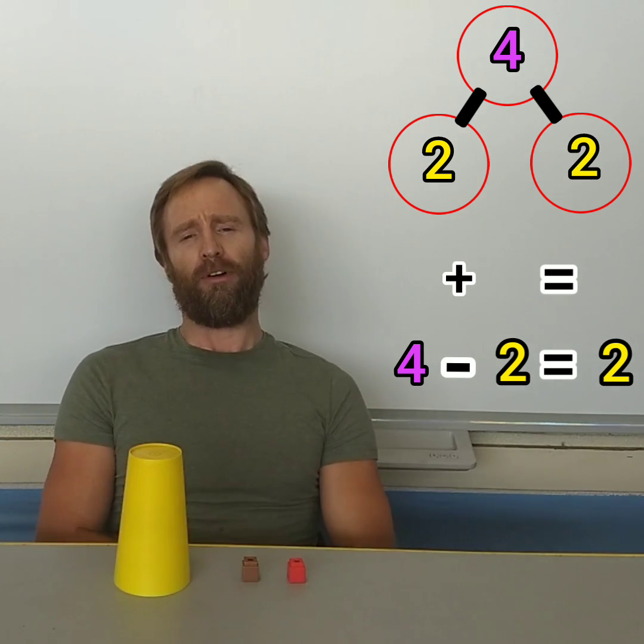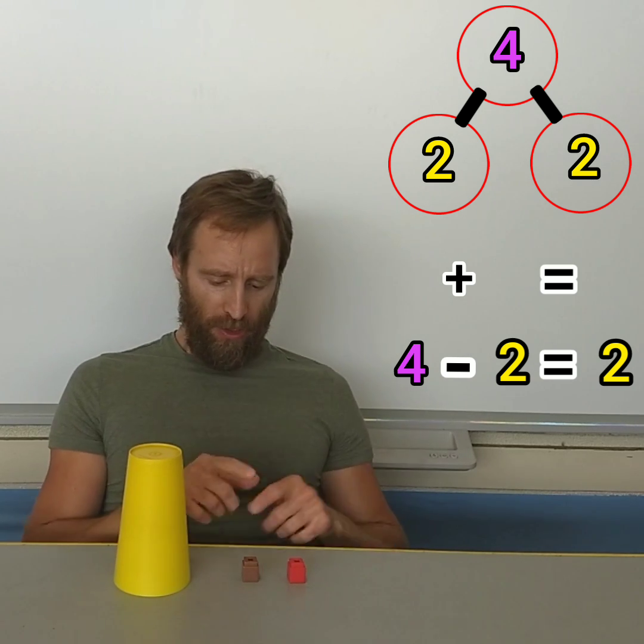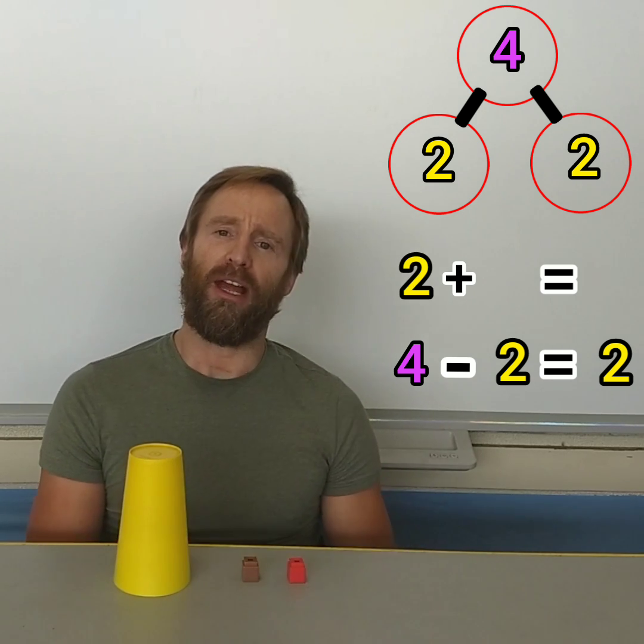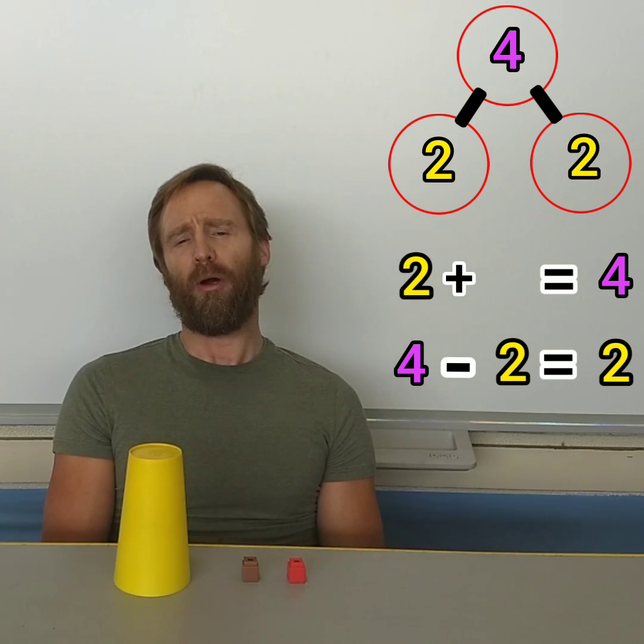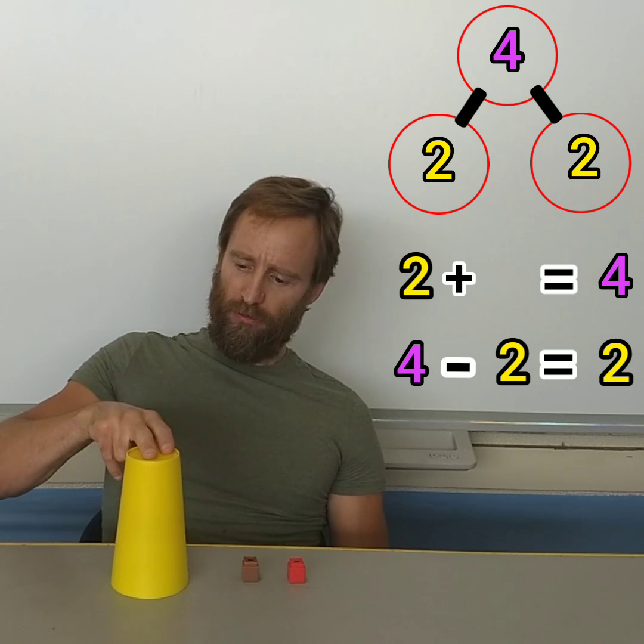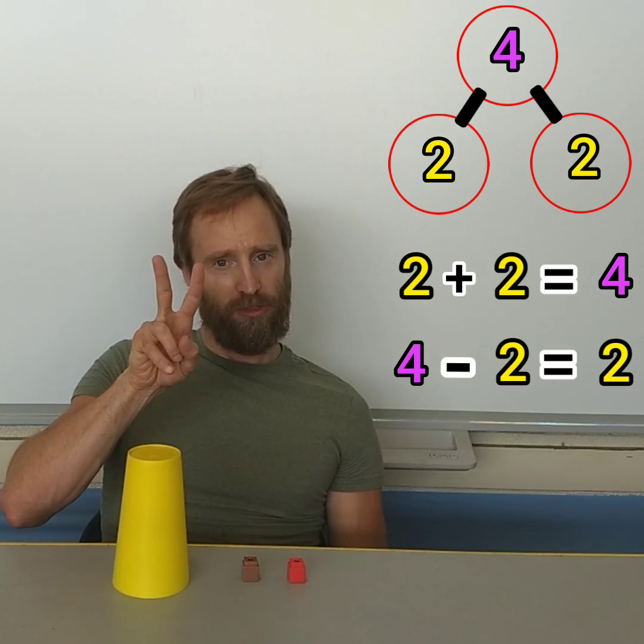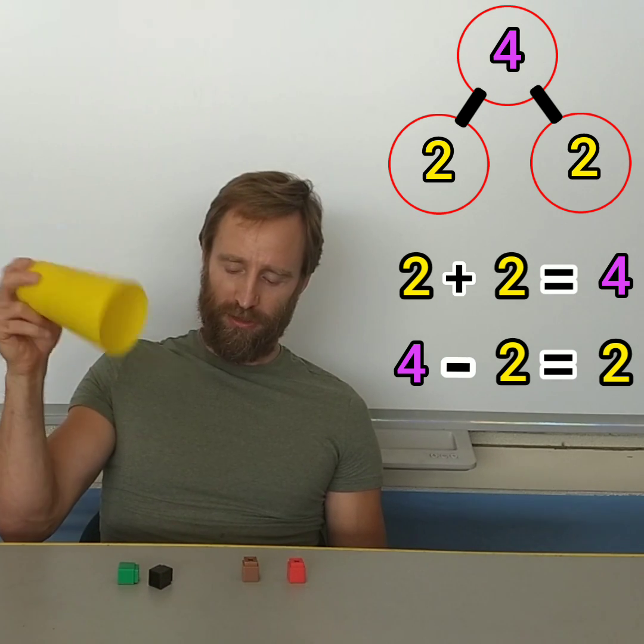What's another way for us to solve that? Well, I know I have two but I'm supposed to have four. Two plus what makes four? One, two, three, four. Two plus two makes four. And that's what under the cup shows us.